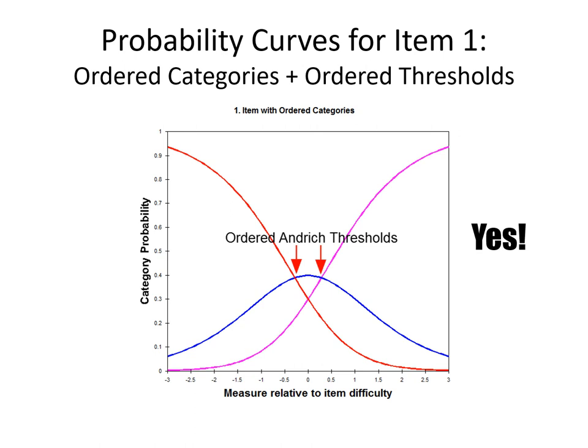Here's what we see for the probability curves for the item with ordered categories. It has ordered Andridge thresholds — yes, exactly what we expect. Those are the probability curves for zero, one, and two that we're looking at.